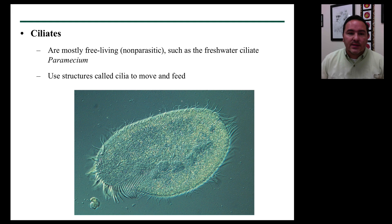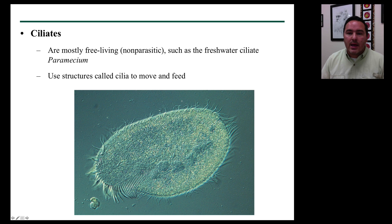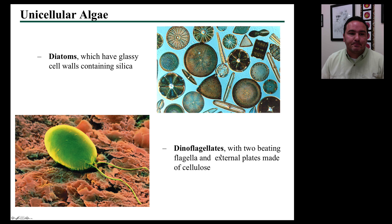The ciliates are a group of protists that have cilia surrounding their cells that allow them to move. Sometimes the cilia can be bundled together in structures called cirri — c-i-r-r-i — and this allows them to move and to feed through the mediums in which they live.